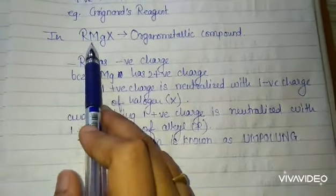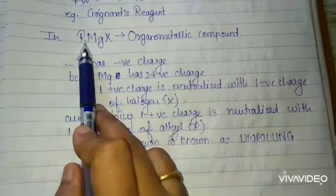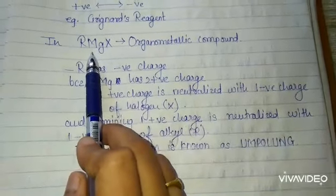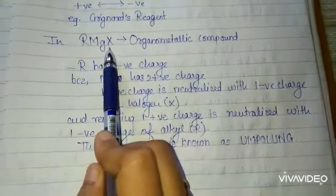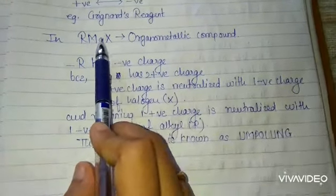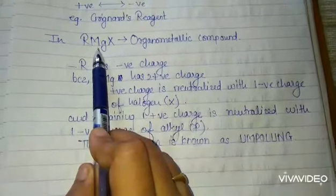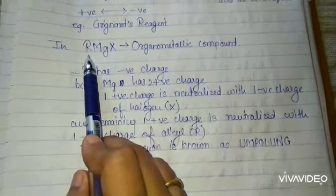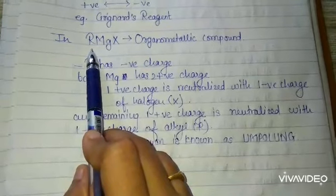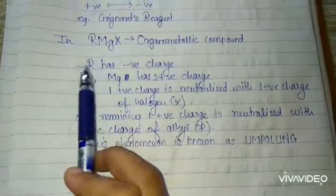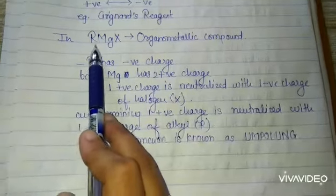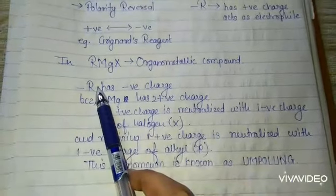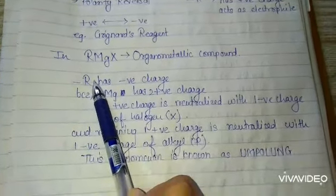How? See, Mg is attached with the alkyl and halogen. Mg bears two positive charges. One positive charge is neutralized with the one negative charge of halogen, and one positive charge of magnesium is neutralized with the one negative charge of the alkyl group. Hence, the alkyl in Grignard reagent acts as a nucleophile, and that reversibility of the charge of the alkyl group from positive to negative — this phenomenon is termed as umpolang.